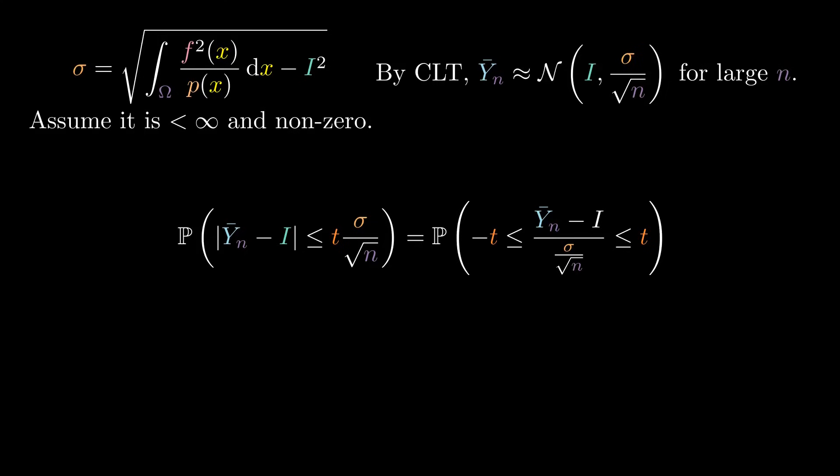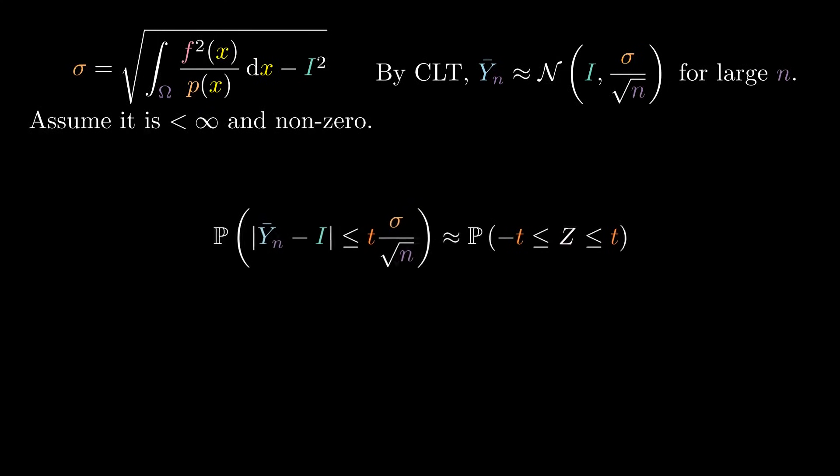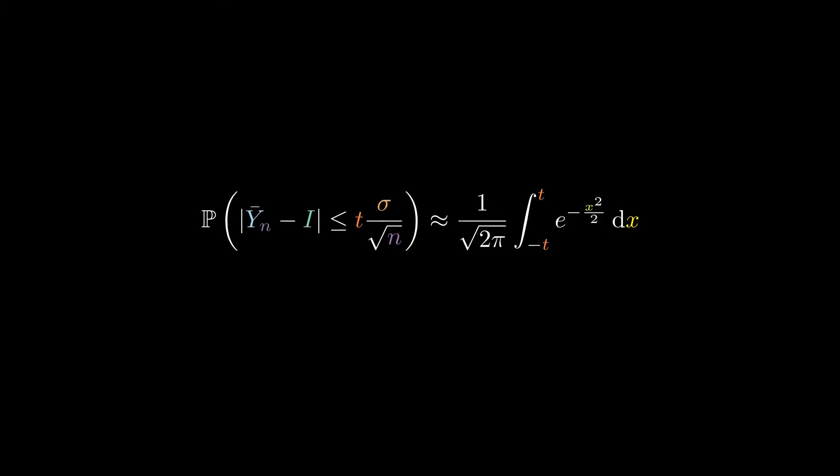By the normal approximation we obtained, we can substitute the middle term by a standard normal z to get an approximation of this probability, and hence the desired probability will be approximately the following integral. The value of this integral increases really quickly with t, as we can see now.